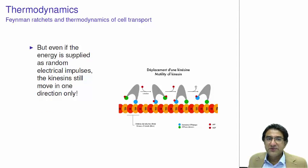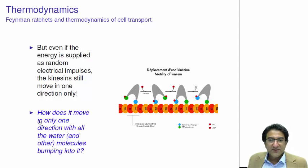Now, but the problem is this. Even if energy is supplied as random electrical impulses, the kinesins only move in one direction. Now how is it possible, how is it possible to change random energy into directed energy? This is amazing. How does it move in only one direction with all the water molecules and everything bumping into it, like I showed you in the lectures? The Brownian motion, how does it overcome the Brownian motion?